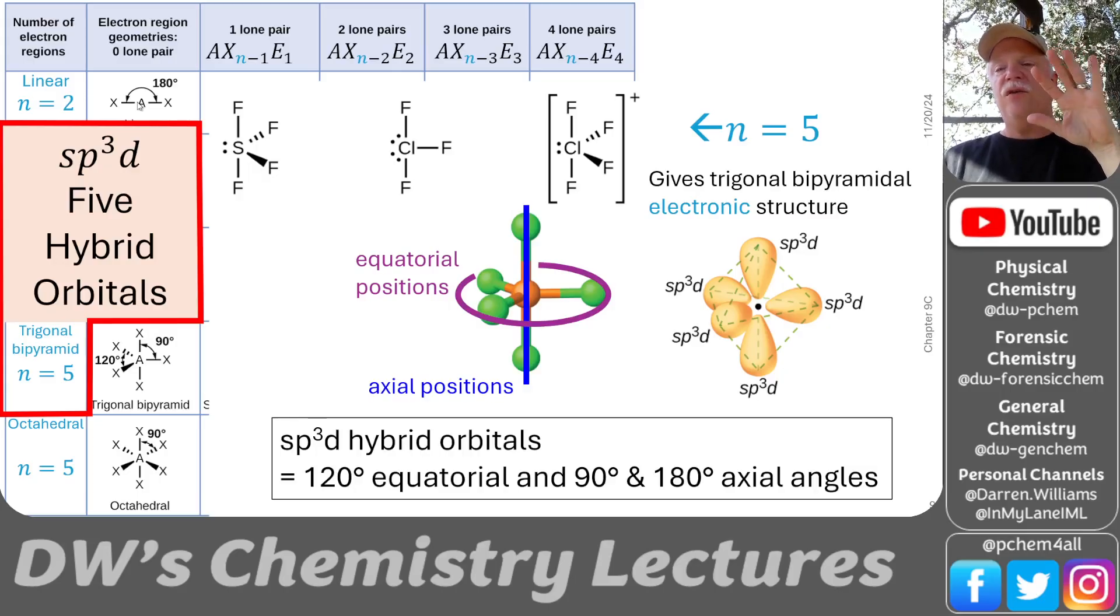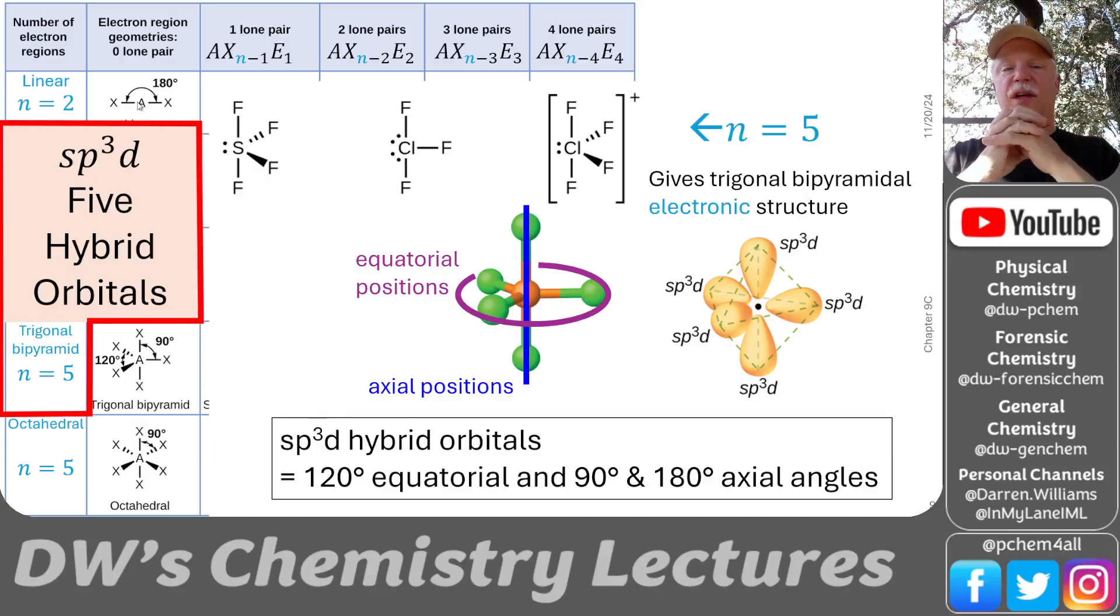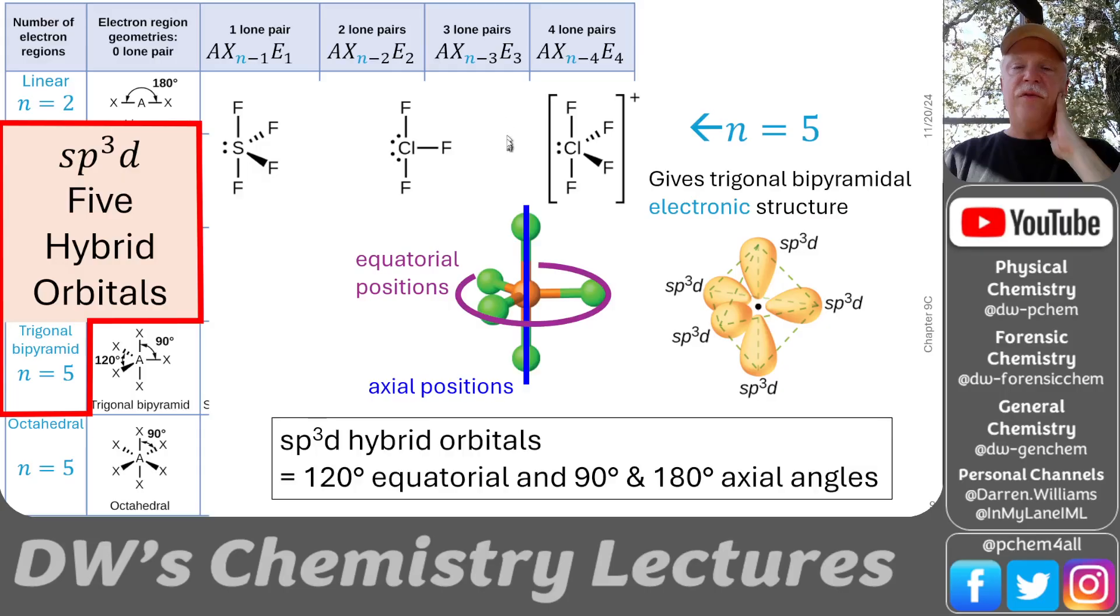This is what you have when you have five electron groups around a central atom. It gives you a trigonal bipyramid electronic structure. And then however many atoms you have on there, that gives you the different names for the molecular structure. Like the one shown up here, this CLF3, that's a T-shaped molecular structure. But it's a trigonal bipyramidal electronic structure. This one is a seesaw. If we tip it over on its side, these Fs form the fulcrum. And then the ones that are in the axial positions would form the teeter-totter or seesaw board.